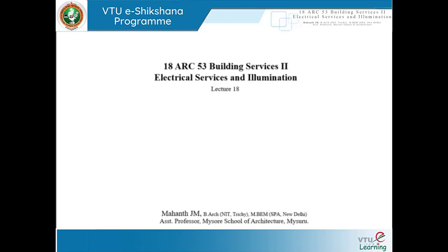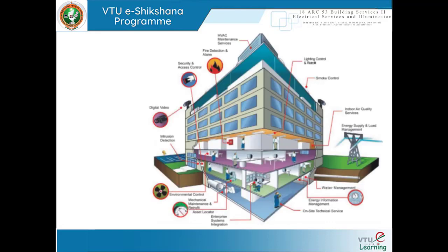We are here in lecture 18, module 5. In the last session, I showed you an image where we were trying to understand what each of these components are and how they can be classified under extra-low voltage systems and which type of extra-low voltage system they would probably be needing. Now we will slowly move on to the individual components that form the system.